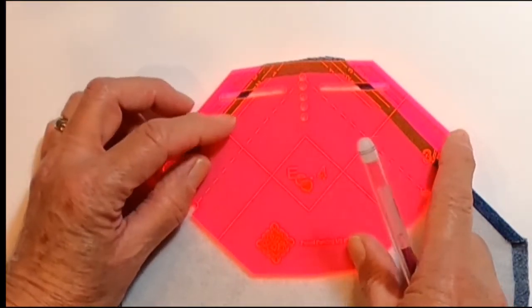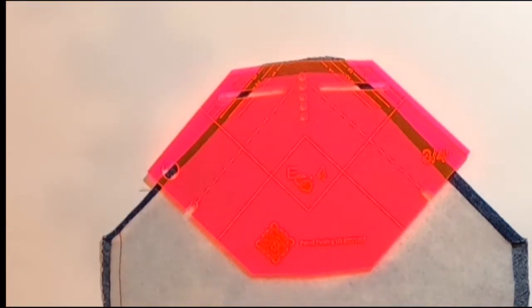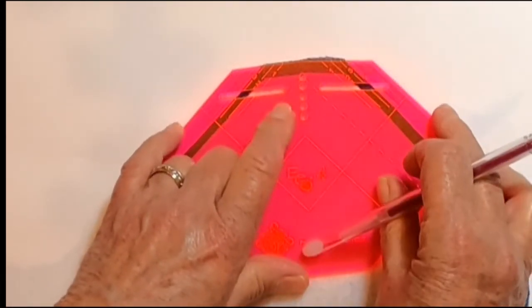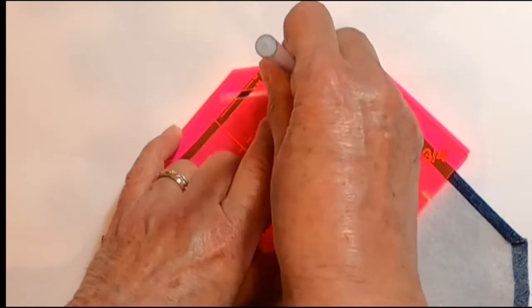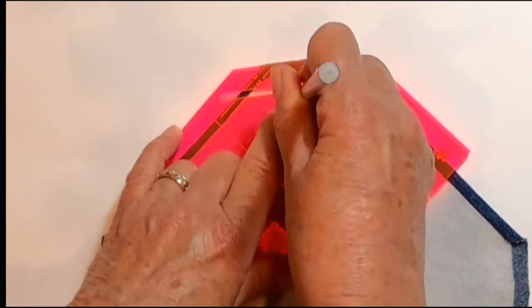If it's number three over here, it has to be number three over here, and then you simply use a marking pen that is temporary for fabric to mark the dots.